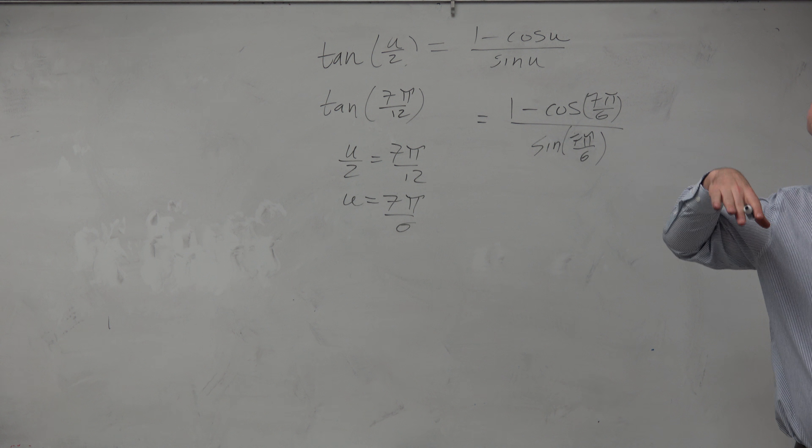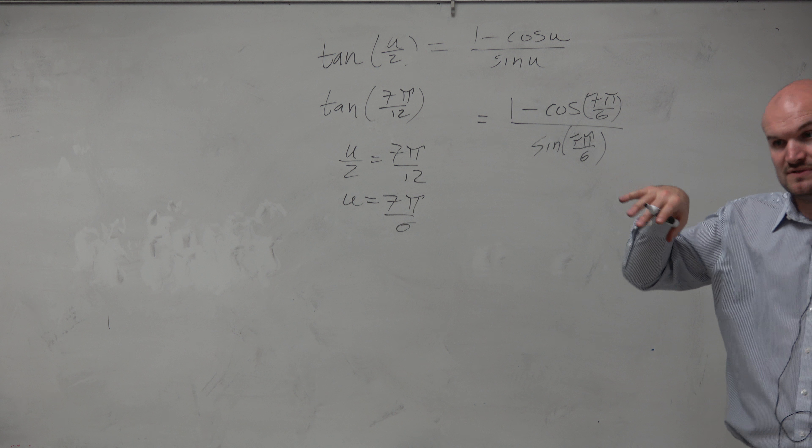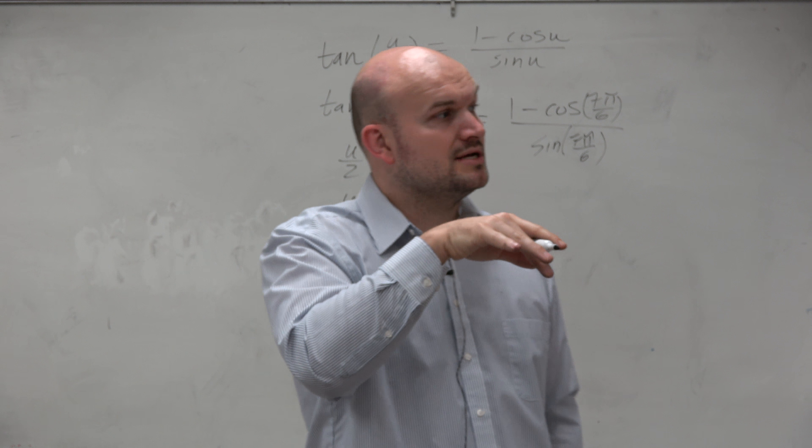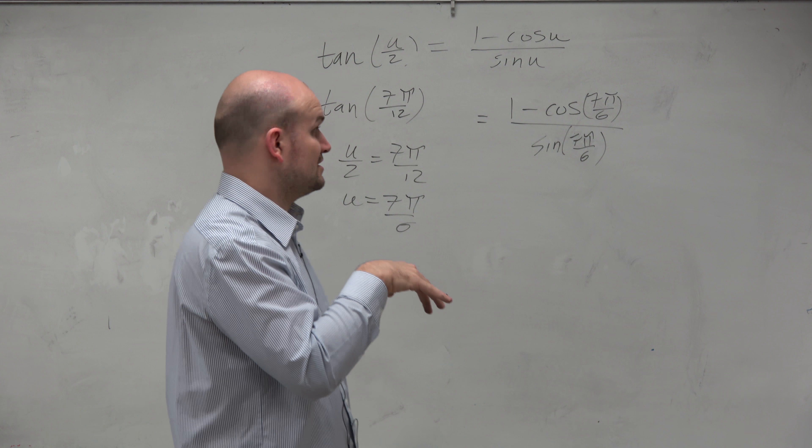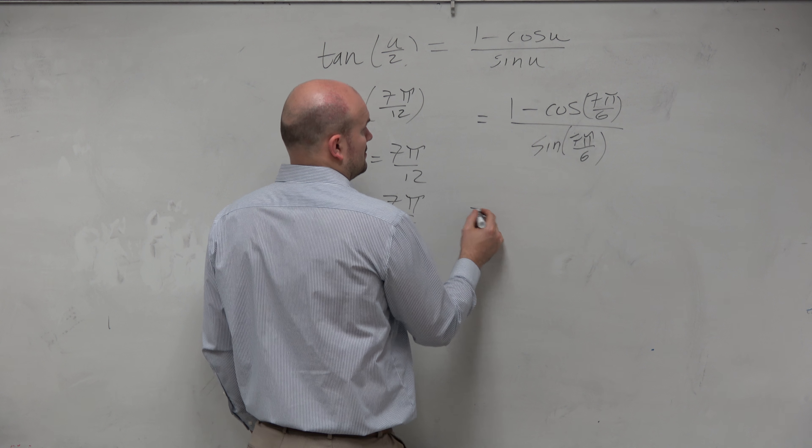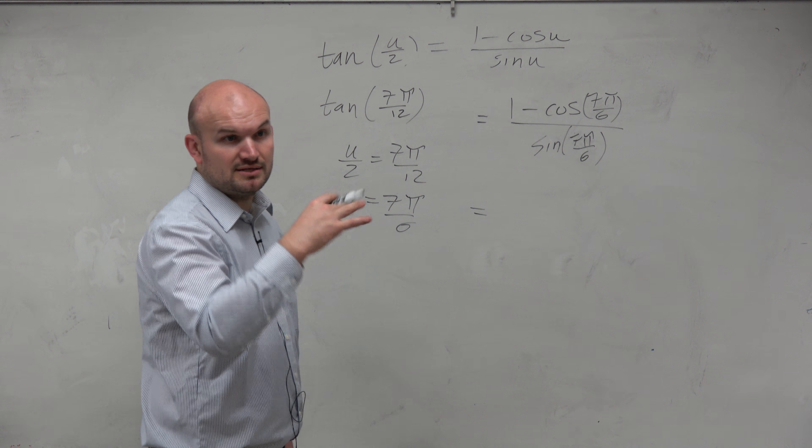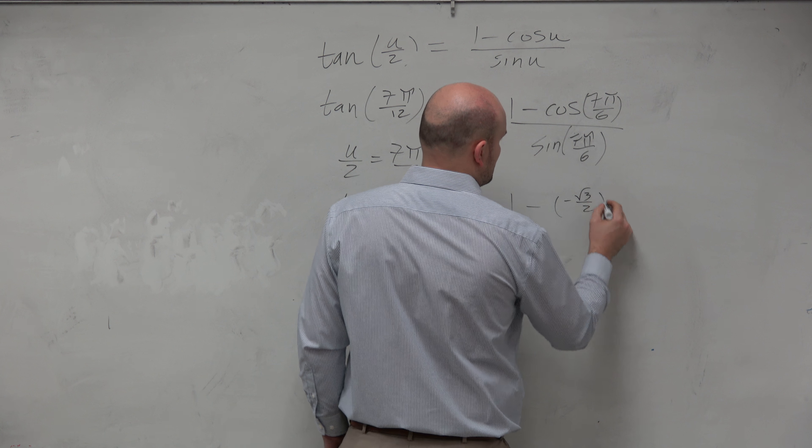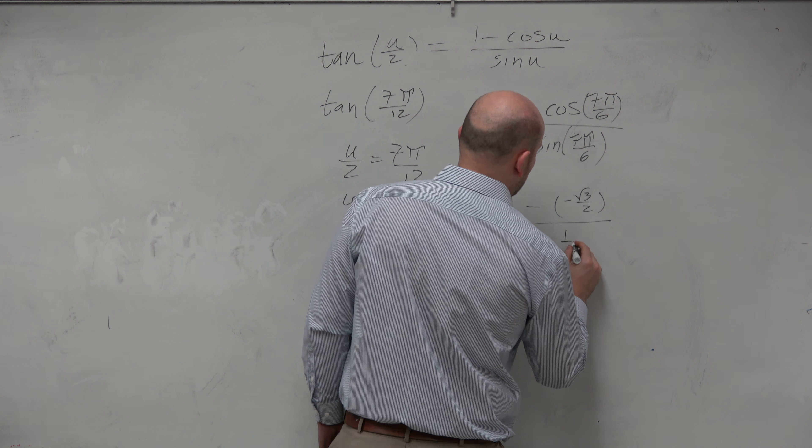Well, we think about 7π/6 and we say that's the same as a reference angle of π/6, but it's in the third quadrant. So therefore, sine and cosine are both negative, right? Are you guys following me on where that is, the third quadrant? Negative. So that's (1 - (-√3/2)) / (-1/2).